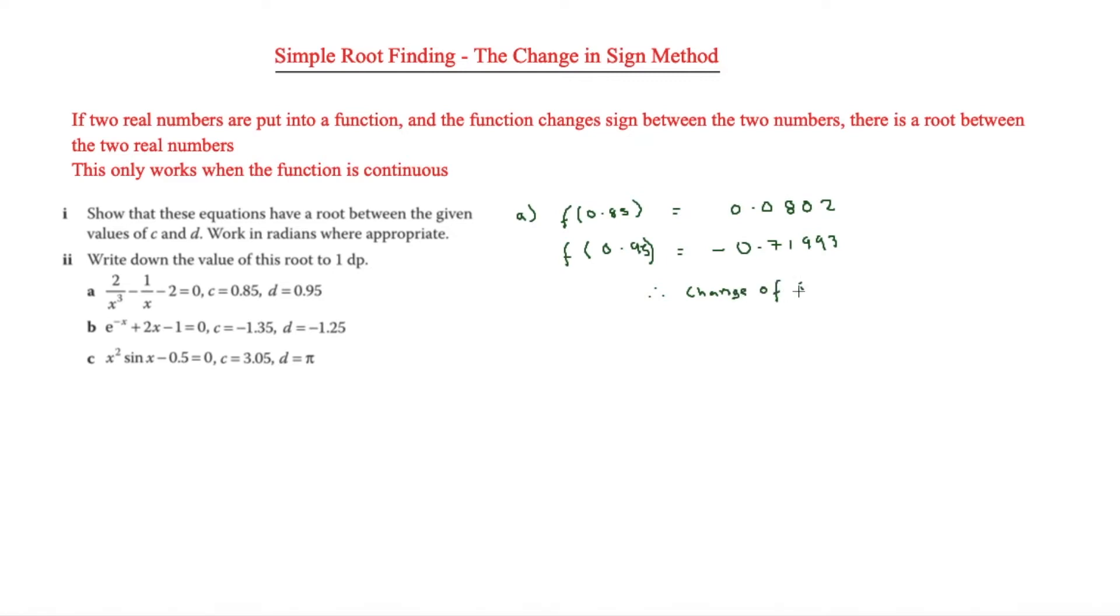The next part is asking us to write down the value of this root to one decimal place. We don't need to do any more working out. Between 0.85 and 0.95, to one decimal place that shall be 0.9.